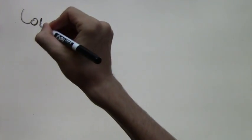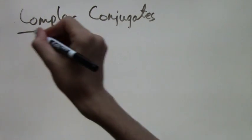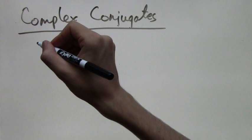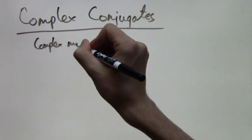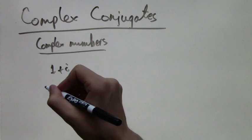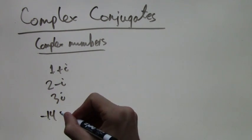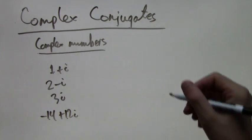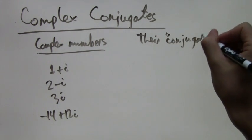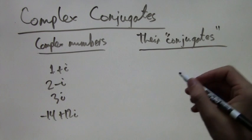In this video lesson we will talk about the complex conjugate. I'll show in a table a few examples of complex conjugates. Let's start with some complex numbers in one column: 1 plus i, 2 minus i, 3i, and negative 14 plus 12i. Each one of these numbers has a corresponding complex conjugate — a related number that is called the conjugate of what you started with. It's actually pretty simple.